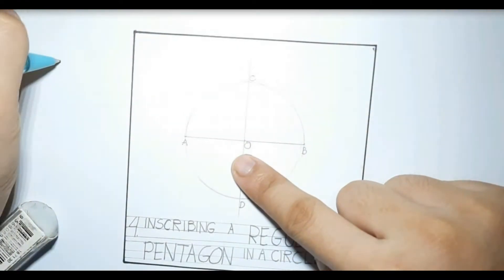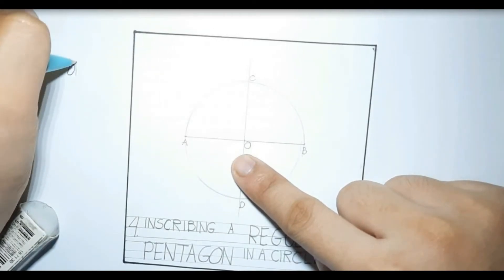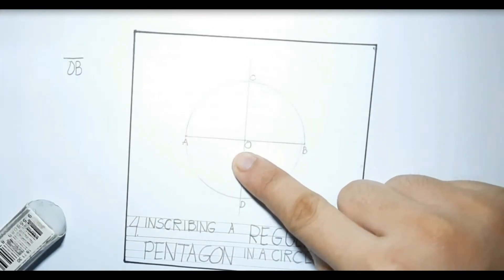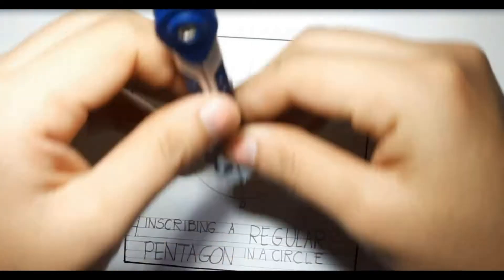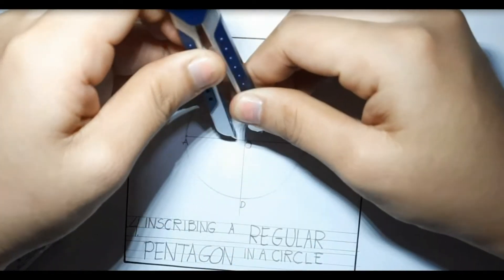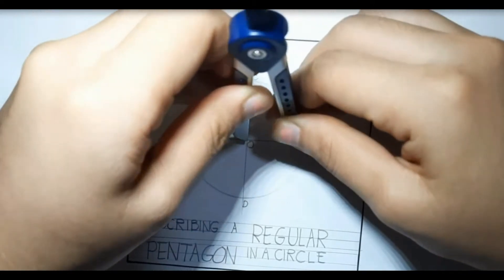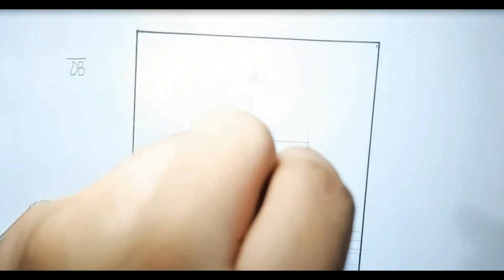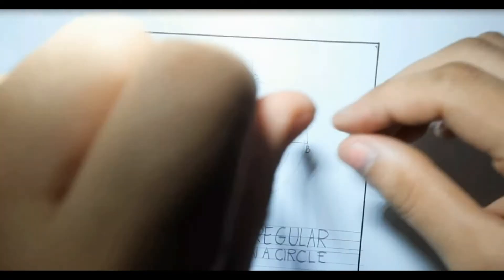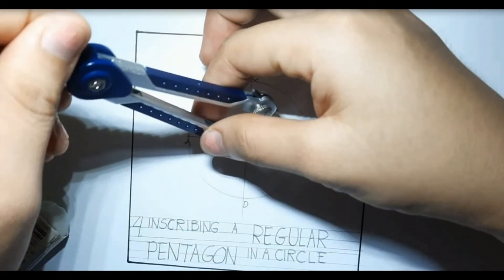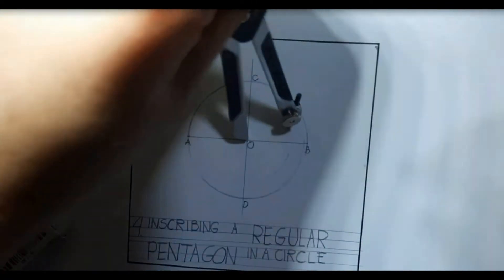Bisect the line OB. Using a compass from point O, open more than half of line OB. Strike an arc on bottom, strike an arc on top, and do the same on point B.